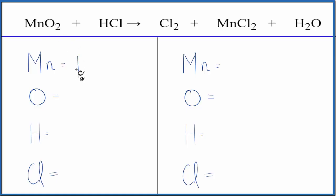We have one manganese atom, two oxygens, one hydrogen, and then the one chlorine there.